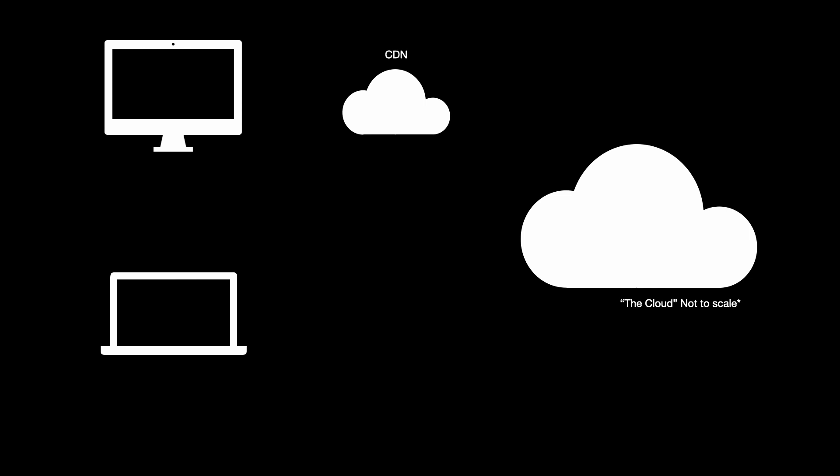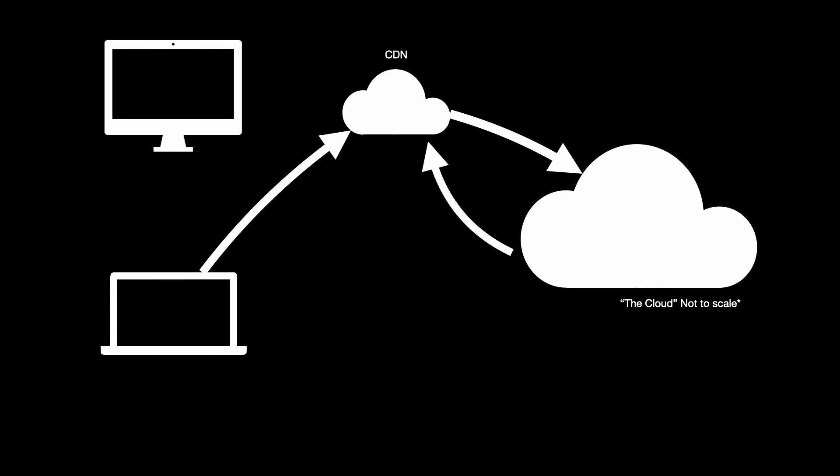When you introduce a CDN into the mix, requests for these individual static files are instead requested from the CDN network. The first time these files are requested, the CDN fetches them from your server just like any other normal request and delivers it to the requesting machine. But the next time someone requests the same file, the CDN doesn't request it from your server and instead delivers it from its cache. The benefits of this are twofold: first, your server now only has to serve these files occasionally since the CDN is serving it for you. Second, the CDN provider will distribute your file to many edge endpoints all around the world, so the amount of time it takes to be delivered is dramatically shortened.